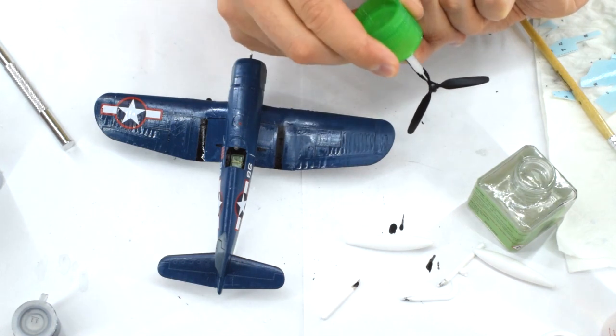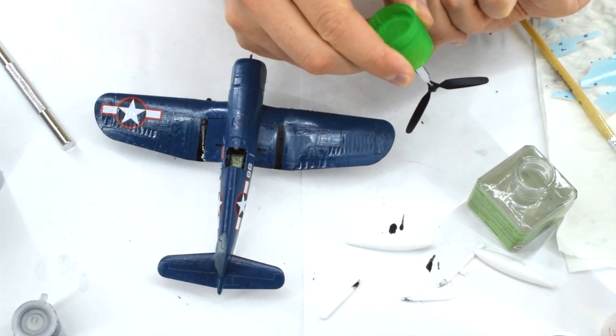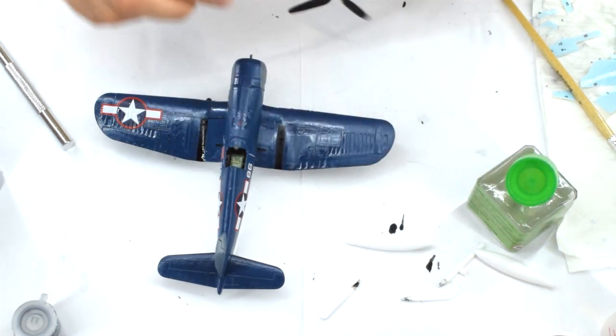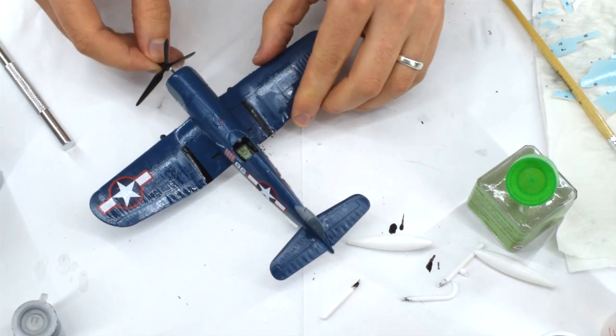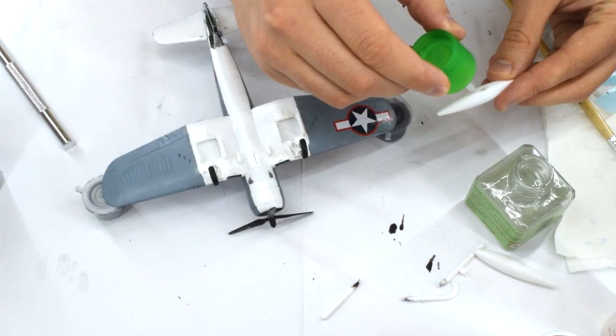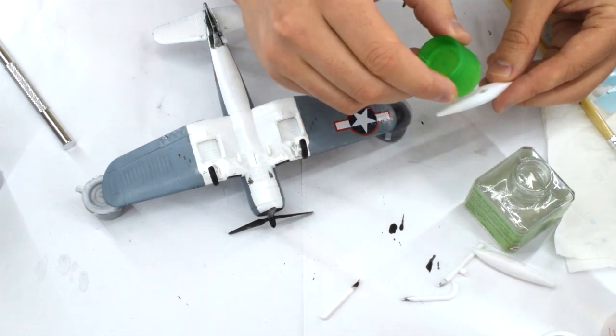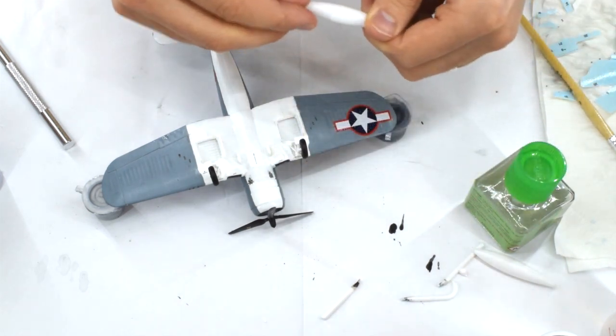With the application of decals now complete on my model, the propeller was cemented onto its locating pin on the nose. This was then followed by the two drop tanks which were cemented to their pylons under the fuselage.